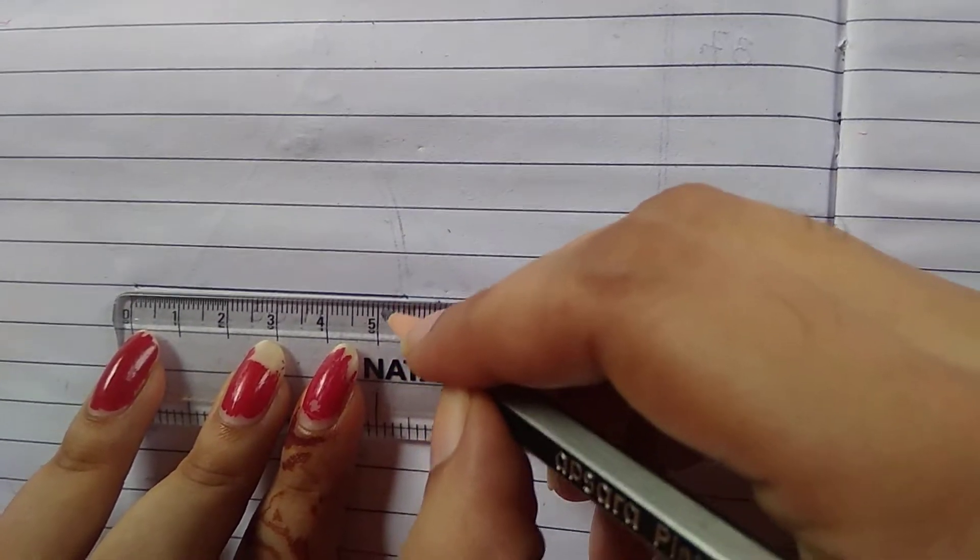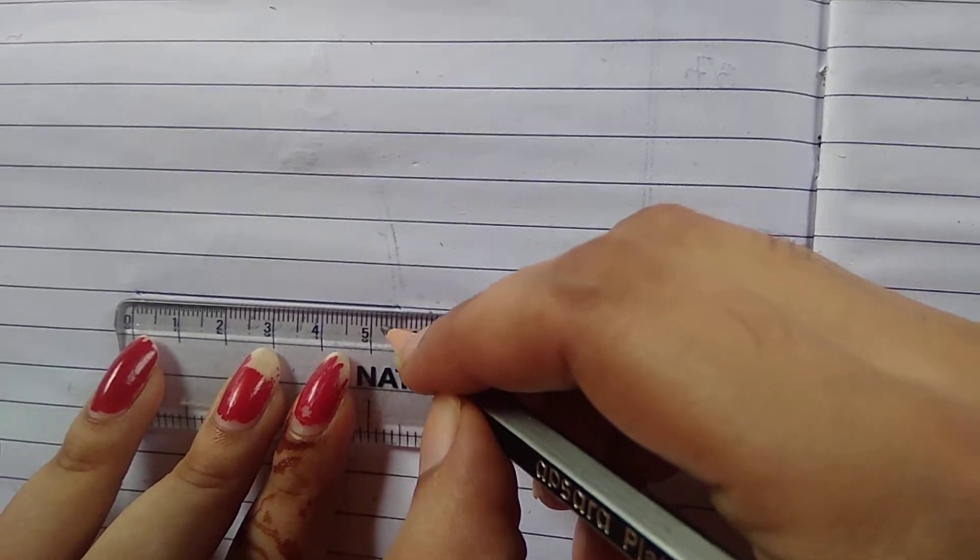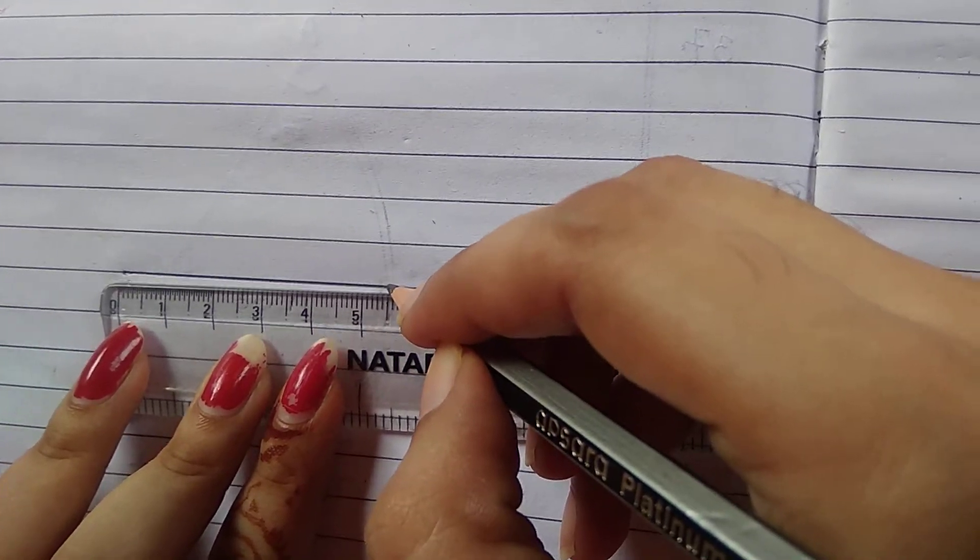After 5, we will count 5 lines: 1, 2, 3, 4, and 5. This is 5.5 cm.